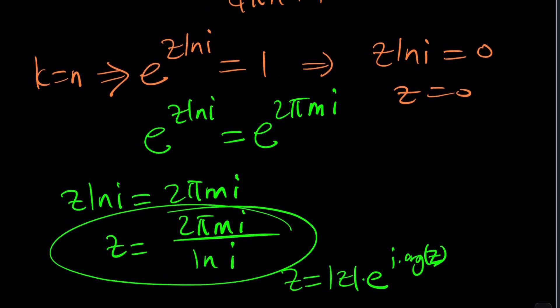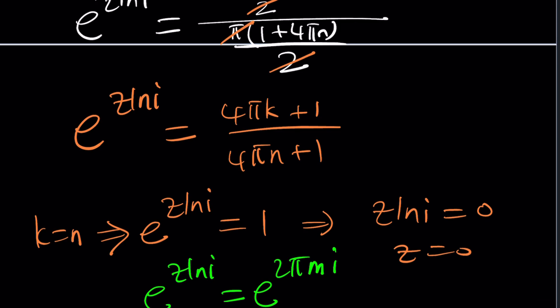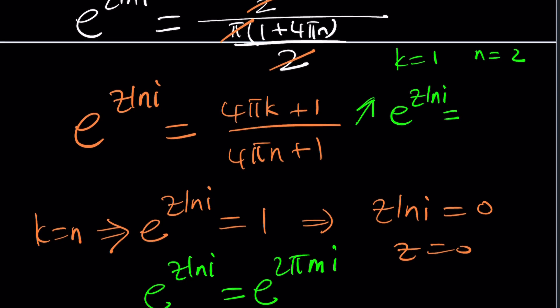Now let's go back here and find out what happens if N and K are not equal and they're different. You can pretty much choose anything you want. Let's say if K is equal to 1 and N is equal to 2. From here you can get e to the power Z ln i equals (4π + 1)/(8π + 1). And if you plug it in, is that going to work? You kind of need to do the natural log and then go from there. Or you can try writing this in polar form. By the way, that's a positive real number, which means when you try to write it in polar form, the argument is going to be 0 radians or 2π or any multiple of 2π.